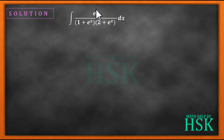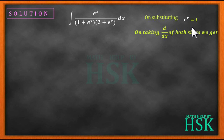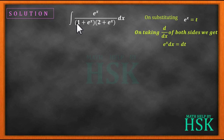This integral can be simplified by substituting eˣ equal to t. Differentiating both sides, we get eˣ dx = dt. So eˣ dx is replaced by dt, and the denominator becomes (1 + t)(2 + t).